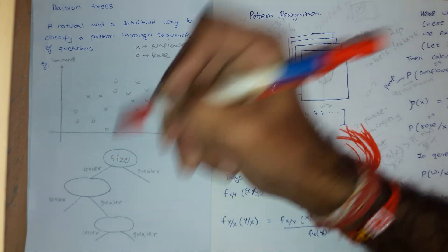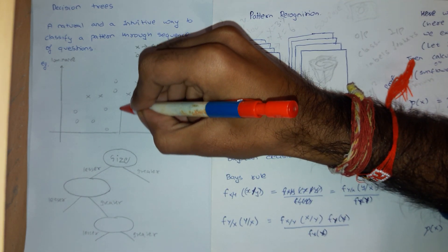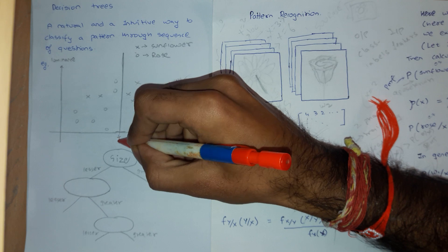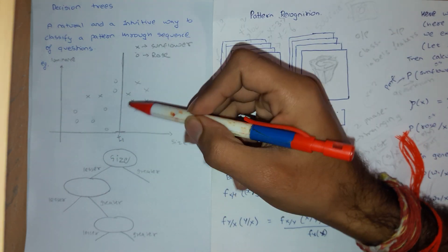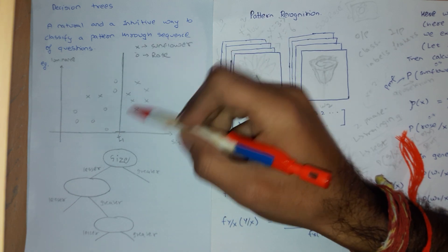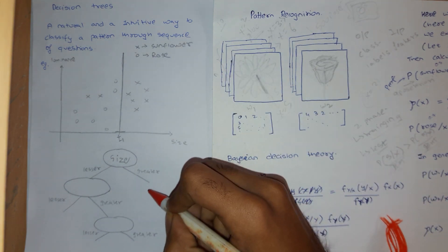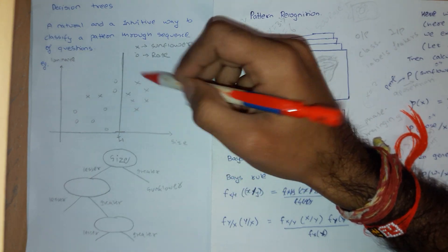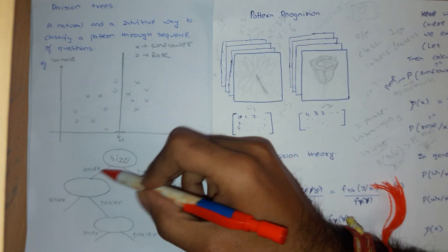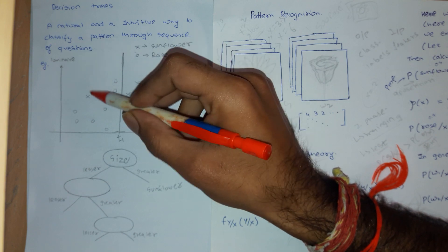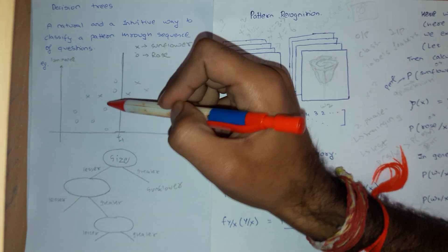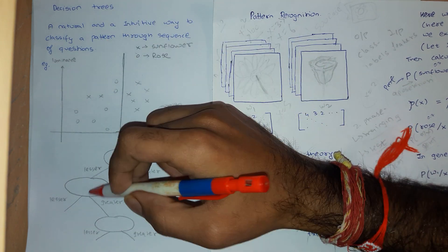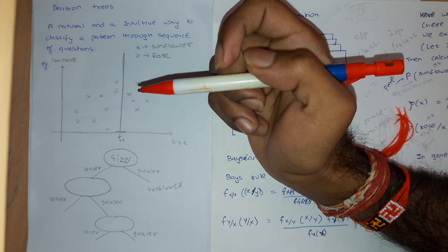My first feature is size and I take this line as my threshold T1. If the samples are greater than T1, I say it is a sunflower, because whenever samples are greater than T1 I always get a sunflower. If the samples are less than T1, there is a mixture — some sunflowers, some roses. So I can again divide this into a subtree.